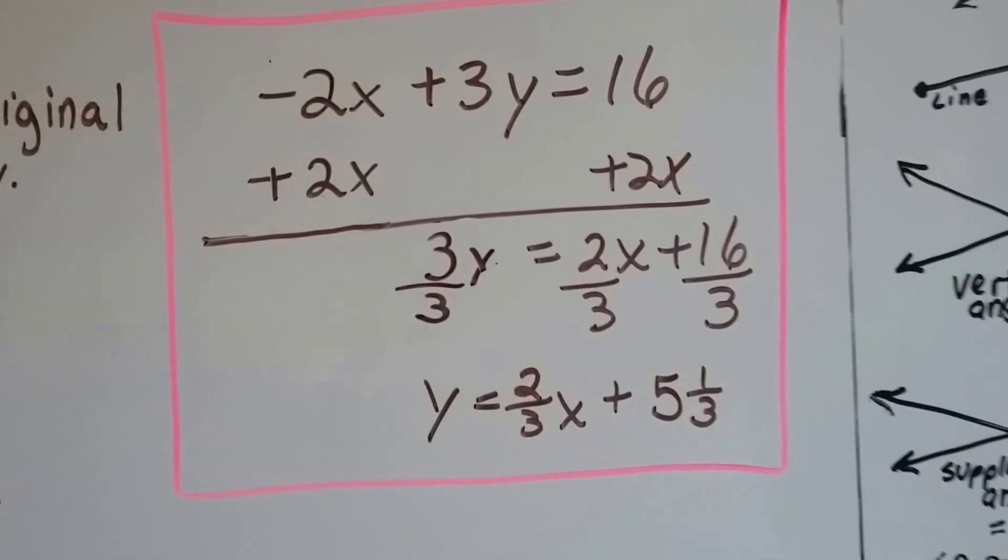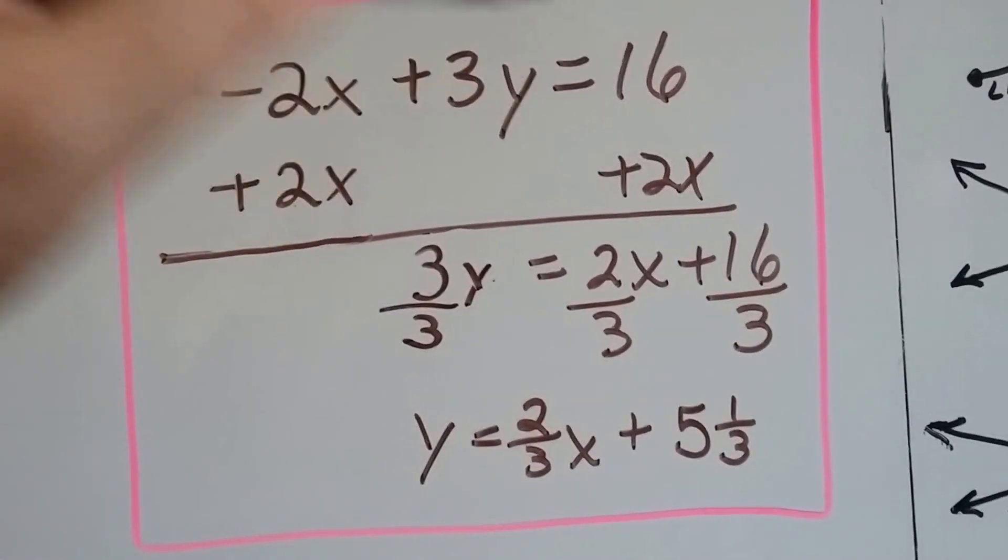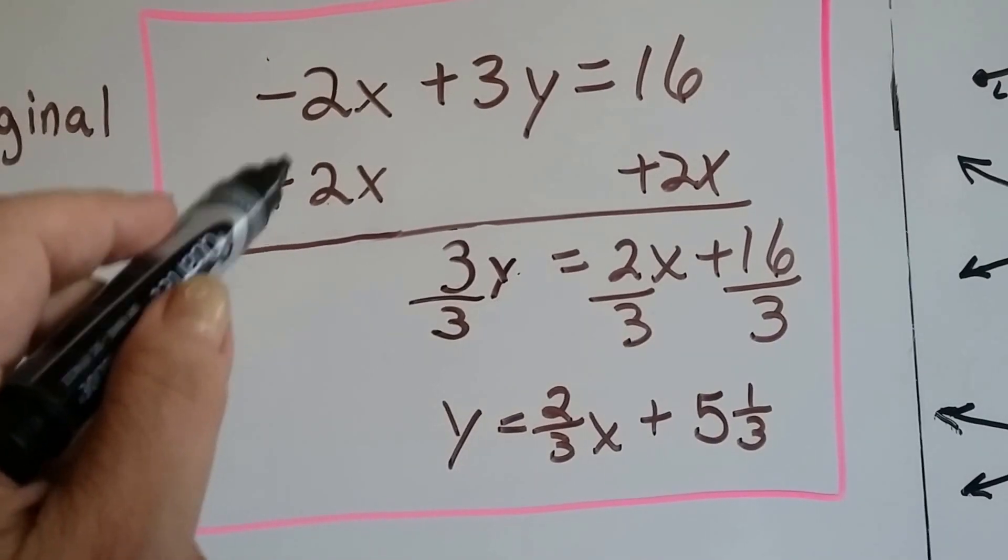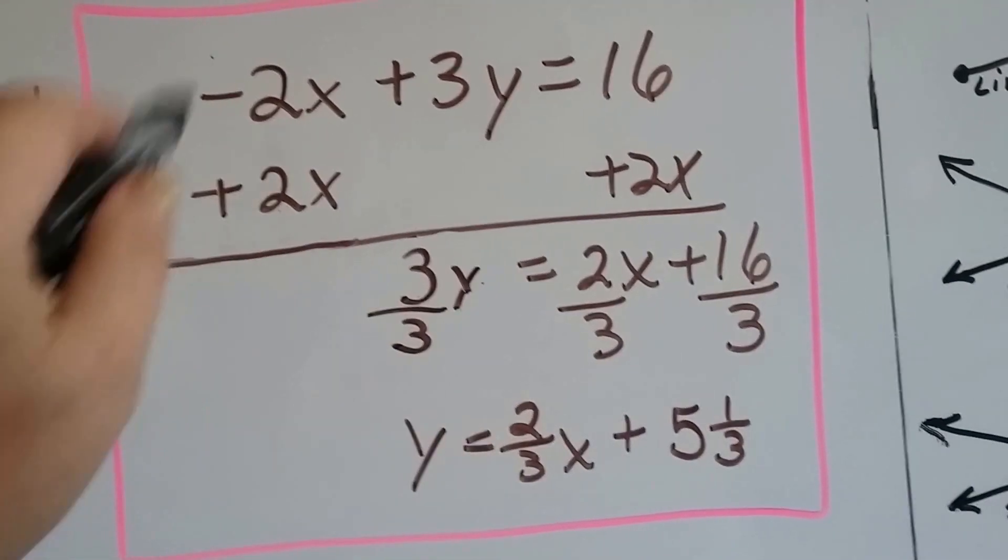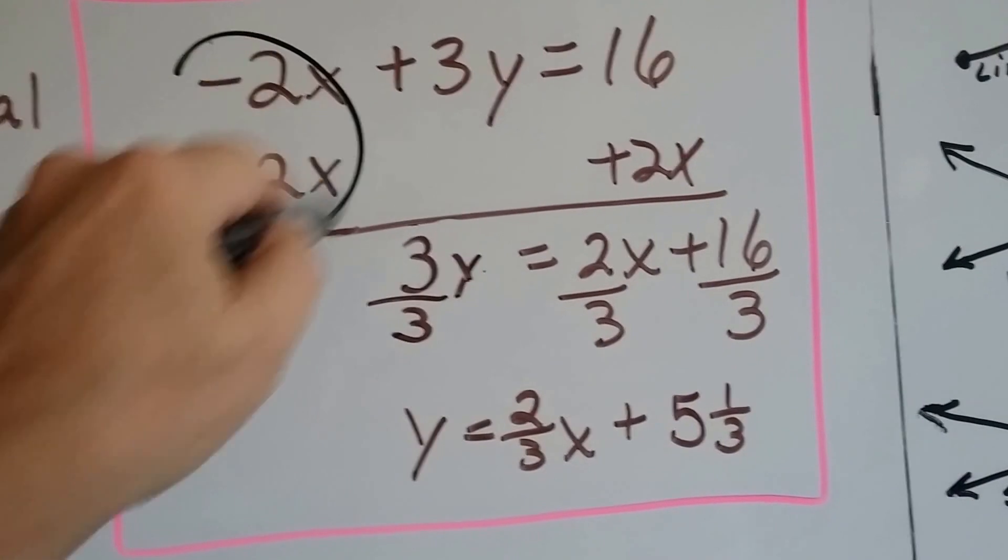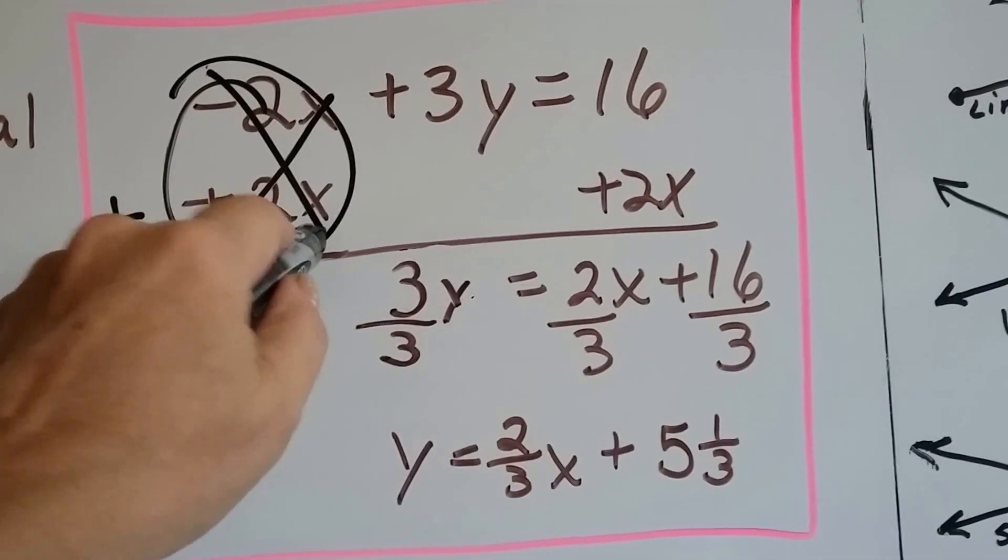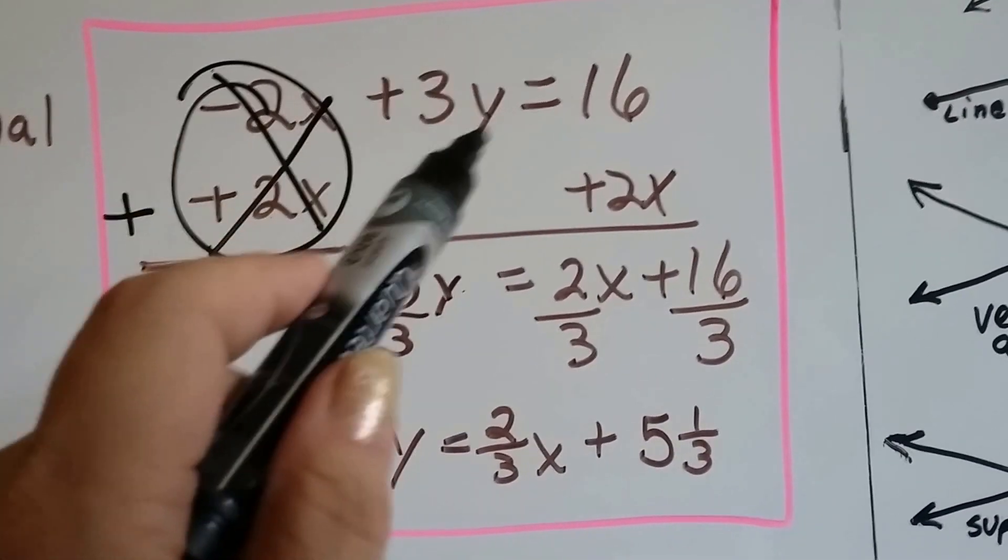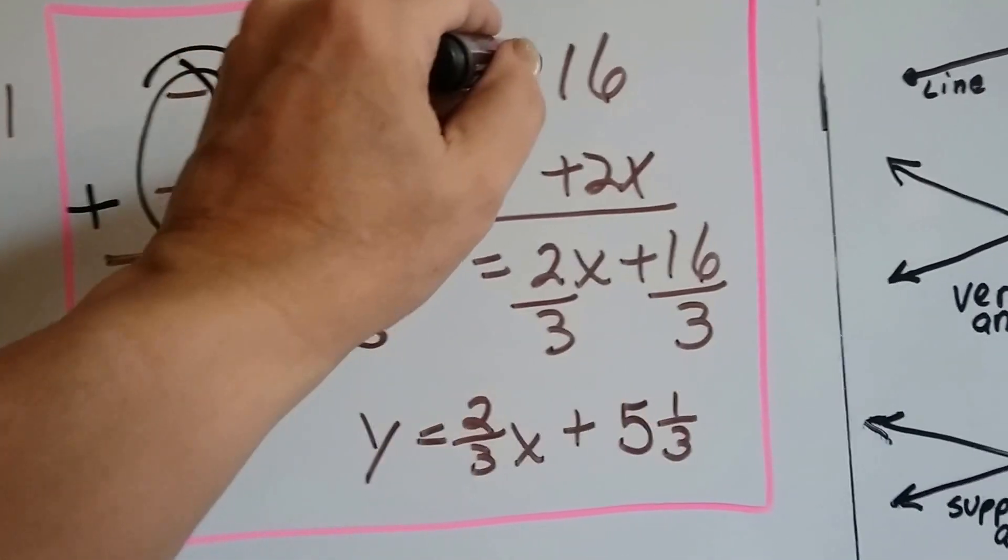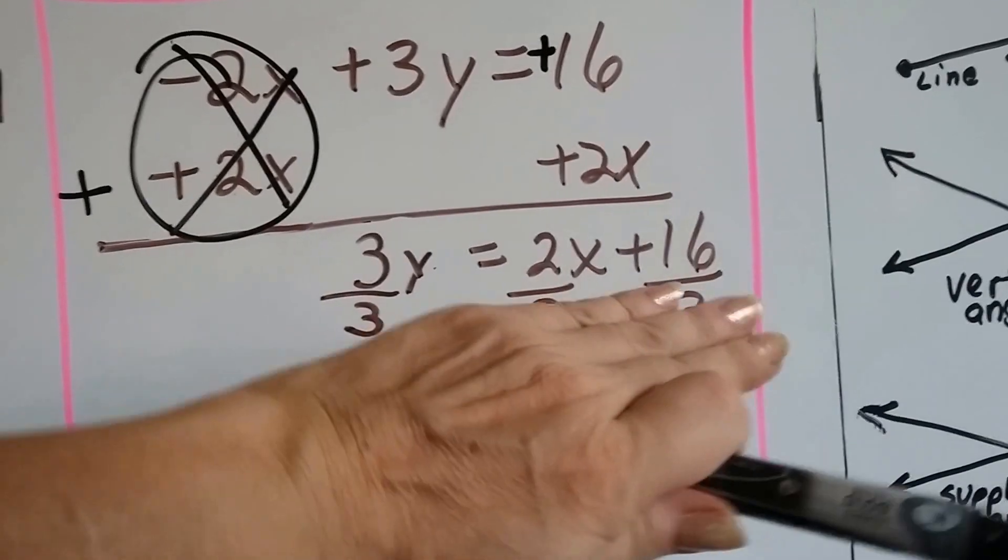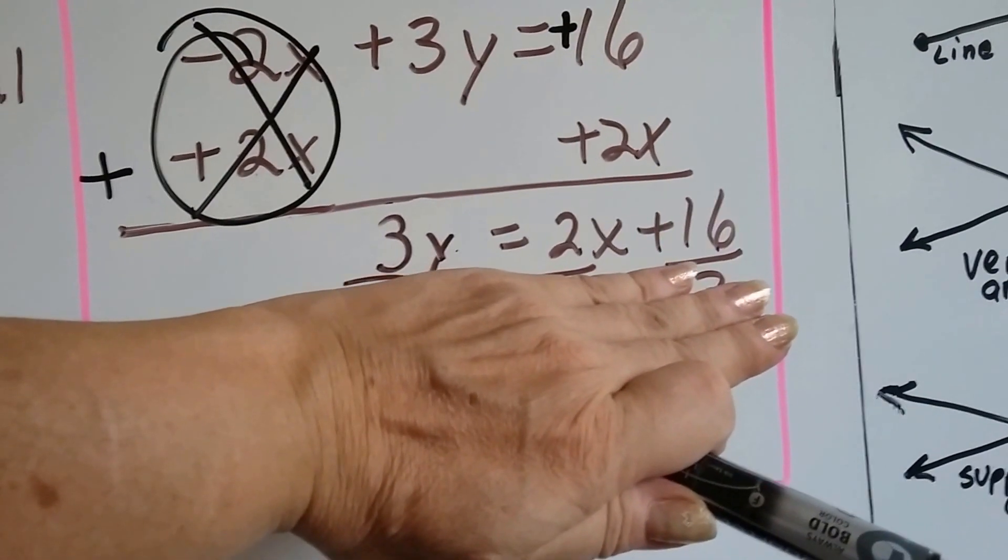Now let's do the second one. We've got negative 2x plus 3y equals 16. We're going to add 2x to each side. So even though we're adding these together, this is going to create a zero pair. So we've eliminated it. Now we've got 3y equals 2x plus 16, because it's a positive 16. So it's going to be a plus 16 back here. But we need to get that y by itself.